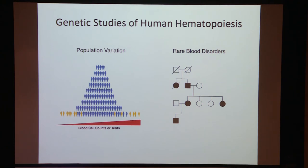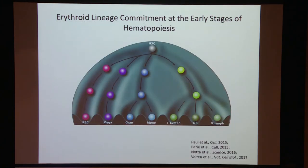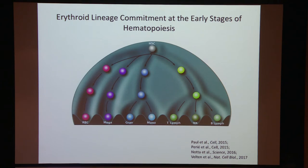We've also been interested in rare genetic blood disorders and how we can gain further insight. Single cell approaches have really revolutionized our understanding of this field. Work from Ito, John Dick, and others has shown us that rather than traditional models of hematopoiesis, lineage commitment largely occurs at the early stages of stem and progenitor cells. While we've gained important insight from single cell studies, we don't yet know how this might be relevant in many human diseases.